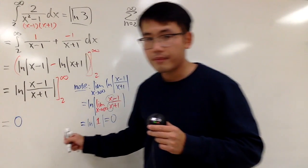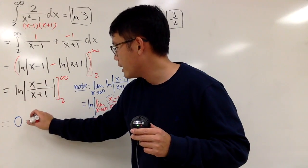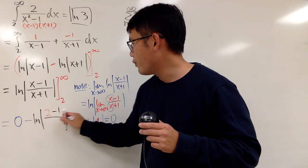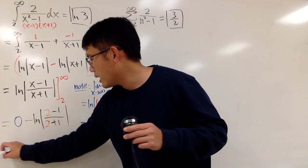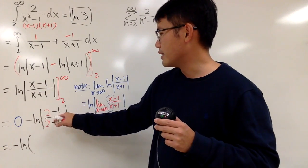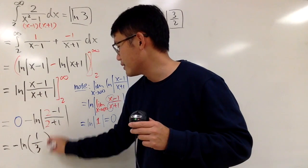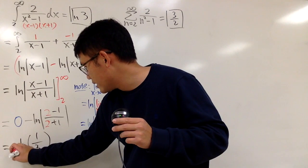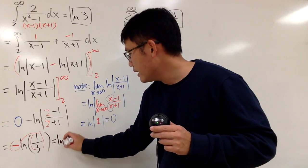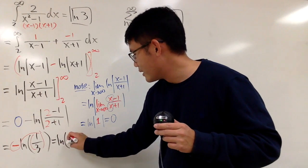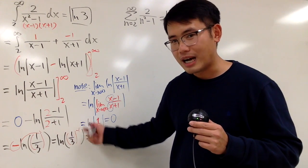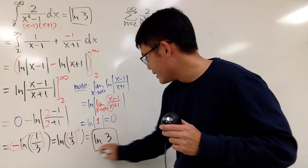We're going to plug in the lower bound of 2: minus ln of the absolute value of (2 - 1)/(2 + 1). That gives us negative ln of 1/3. The negative in the front can be brought up as a power, so we have ln of (1/3)^(-1), which is ln of 3. Done.